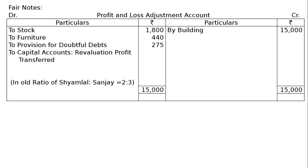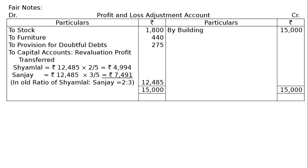The totalling on the credit side is Rs. 15,000, and the debit side totals the same at Rs. 15,000. The difference gives a revaluation profit of Rs. 12,485, transferred to capital accounts in the old ratio of Samlal to Sanjay (2:3). Samlal's share: Rs. 12,485 × 2/5 = Rs. 4,994. Sanjay's share: Rs. 12,485 × 3/5 = Rs. 7,491.